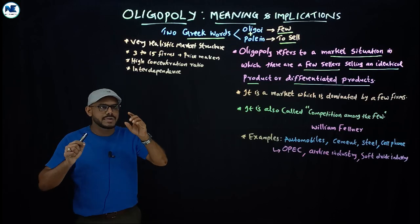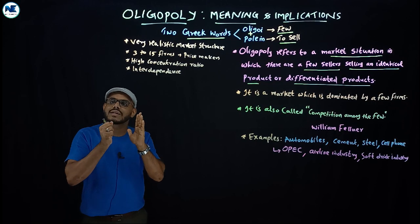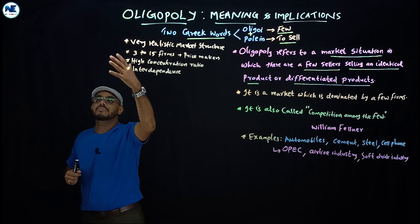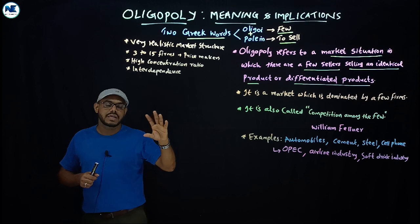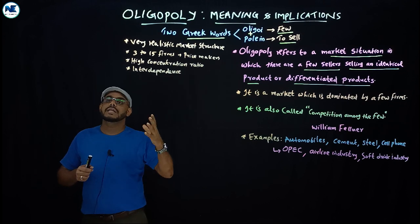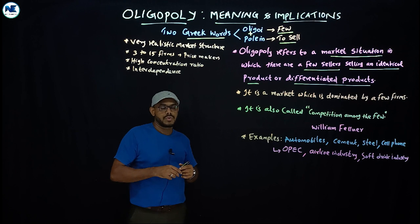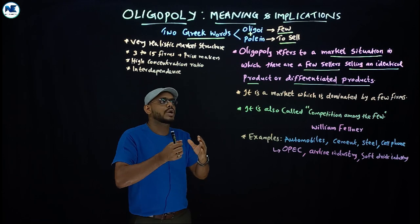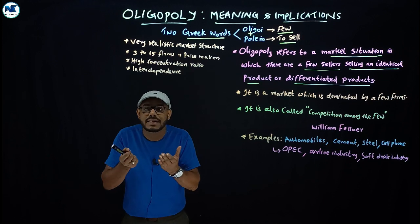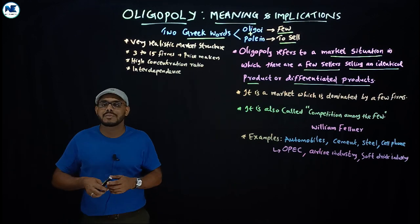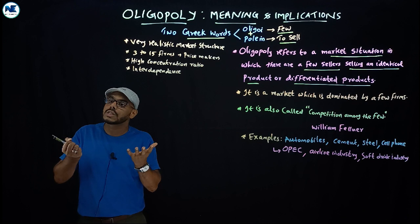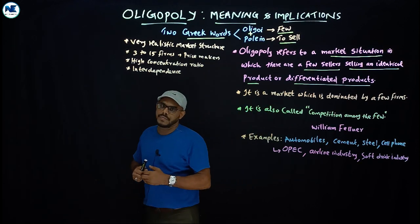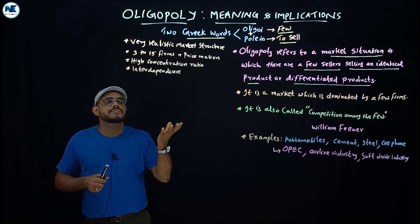We know monopoly where we can see one seller or single firm. In perfect competition we can see large number of buyers and sellers. Similarly in monopolistic competition, many firms or large number of buyers. But here in oligopoly market we can see a few sellers selling an identical product—that is homogeneous product—or differentiated products.